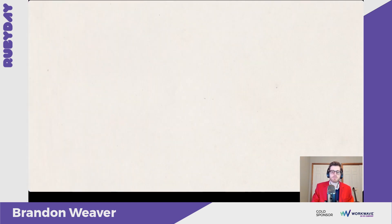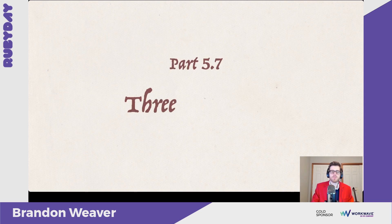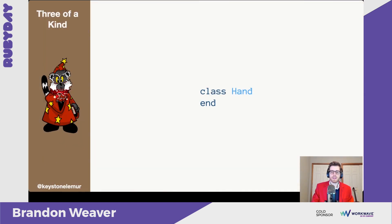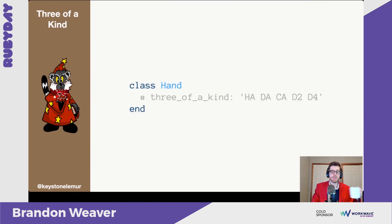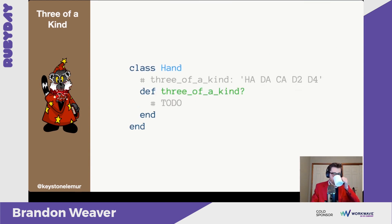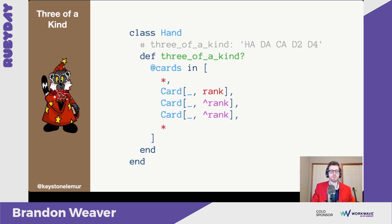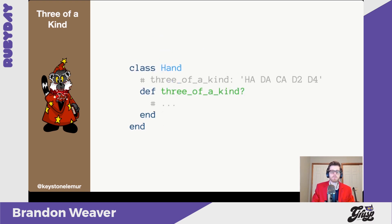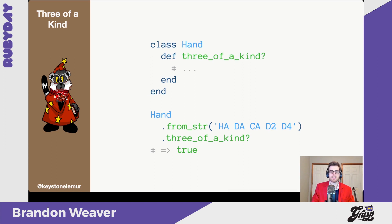Next we have three of a kind — very similar to four of a kind, except just three this time. We want an example of three aces and a method to go with that. We use the find pattern again and pin the rank to make sure three cards have at least the same rank — whether at the front, back, middle, or anywhere in between. Since the cards are sorted, we can make these forms of assumptions. Testing it, we find that it does indeed work.